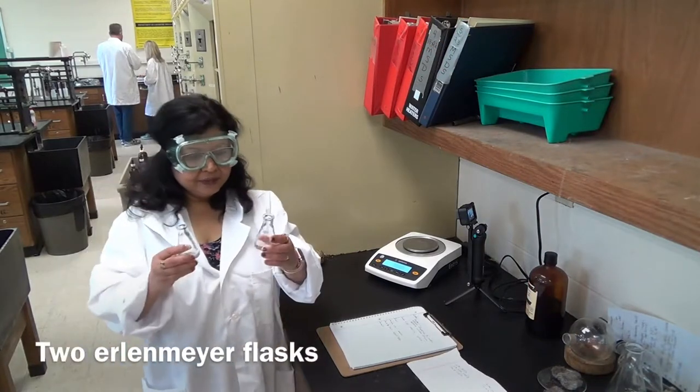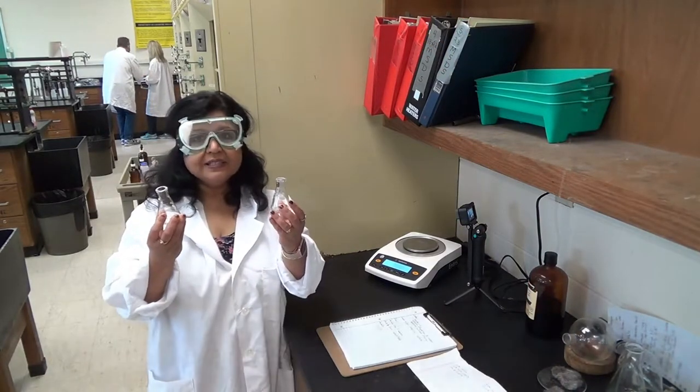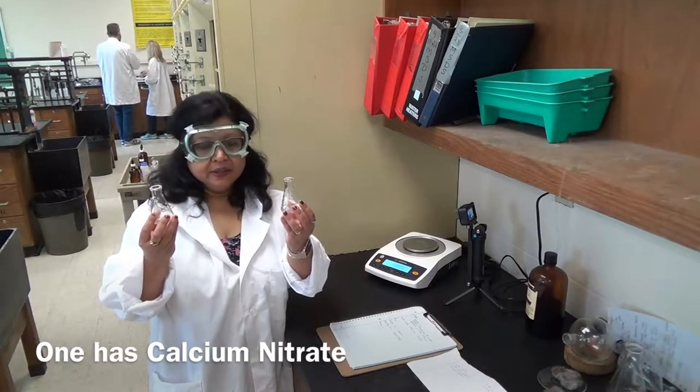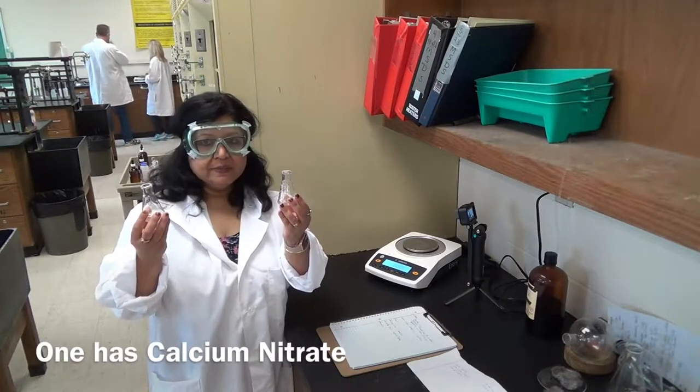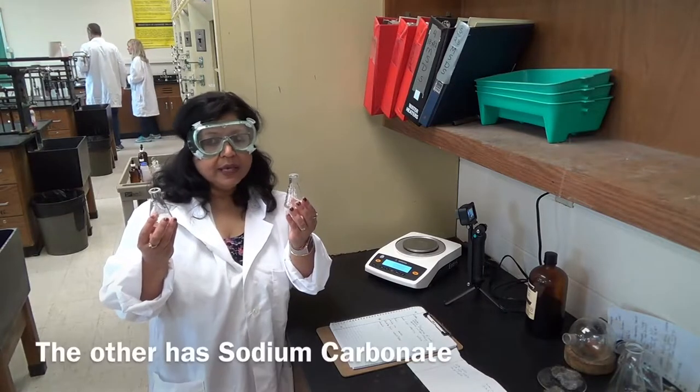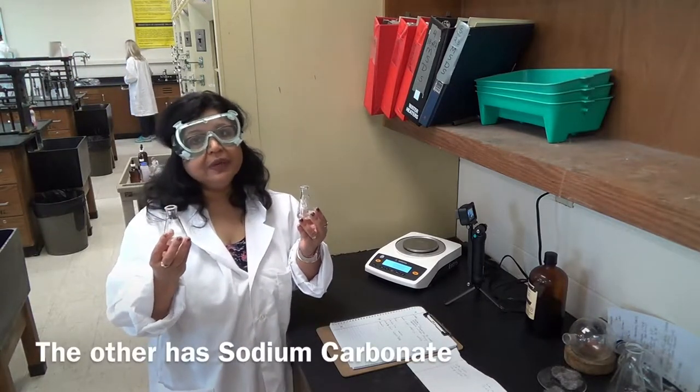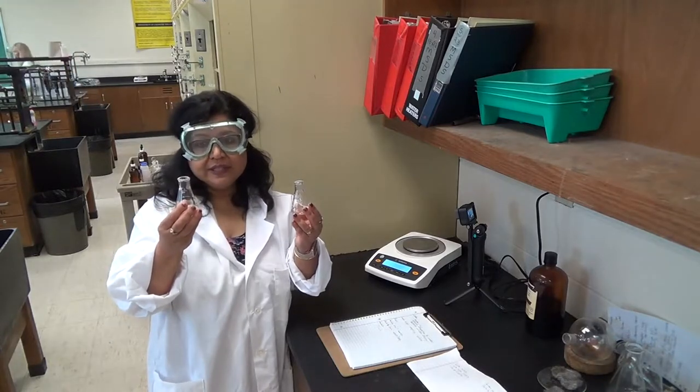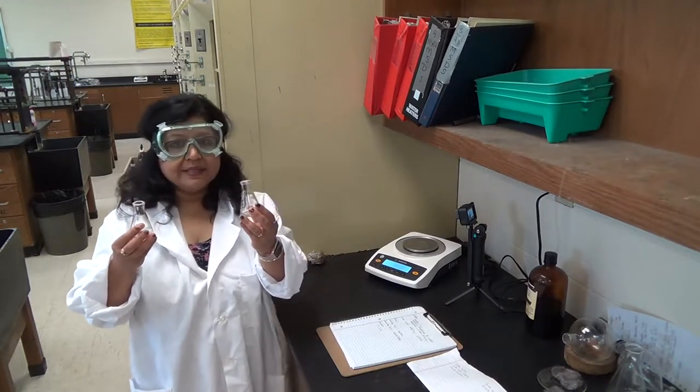Hi class. I have two Erlenmeyer flasks, and I have two chemicals in here. One I have is calcium nitrate of a certain volume, and one is sodium carbonate of a certain volume. Now I'm going to mass each one of these and see what their masses are.